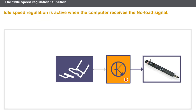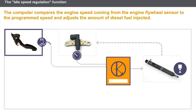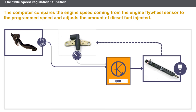Idle speed regulation is active when the computer receives the no-load signal from the accelerator pedal position sensor. Once activated, the computer injects a certain amount of diesel fuel to maintain engine idle speed. The computer compares the engine speed from the flywheel sensor to the programmed speed and adjusts the quantity of injected diesel fuel accordingly.